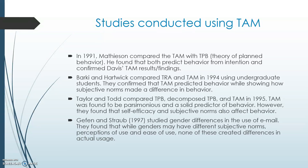In 1994, Barkey and Hartwick conducted a study on user participation in information system development. They found that subjective norms played a role in mandatory system use, while usefulness and ease of use were more important for voluntary use or continued use of a mandatory system over an extended period of time.